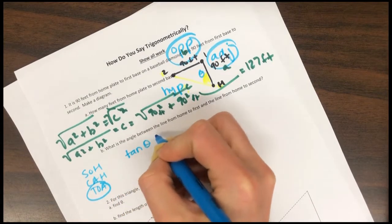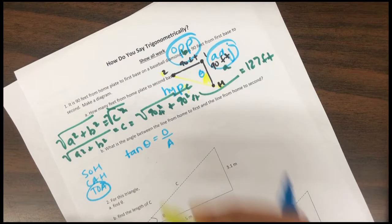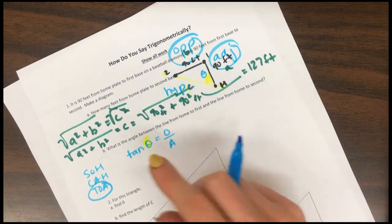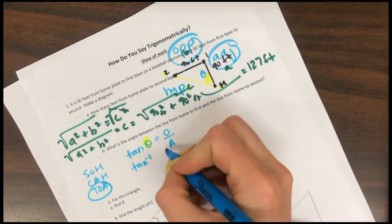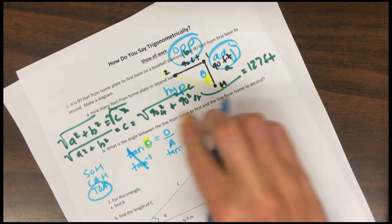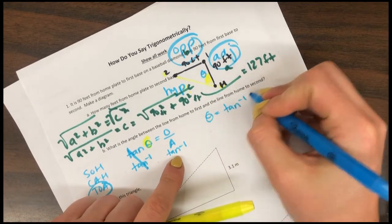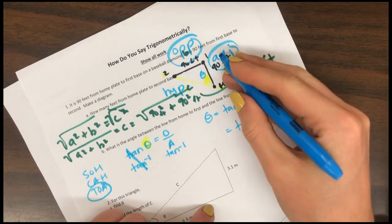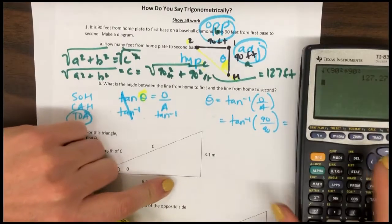I'm always going to start off by saying tangent equals opposite over adjacent. Now, if I want to get the angle by itself, I need to get rid of tangent. We're going to do tangent negative 1 — tangent negative 1 is like subtracting tangent, even though that's not really true. These cancel. So theta equals tangent negative 1 of opposite over adjacent. My opposite is 90 and my adjacent is also 90. When I plug this into the calculator, I get 45.